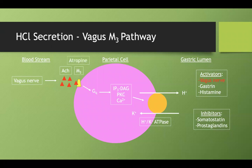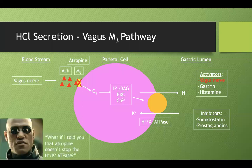If you give somebody atropine, which inhibits the M3 receptor, you would think it would stop all gastric acid secretion. But atropine doesn't stop the hydrogen-potassium ATPase that well, because the vagus nerve actually has two pathways by which to activate this enzyme.